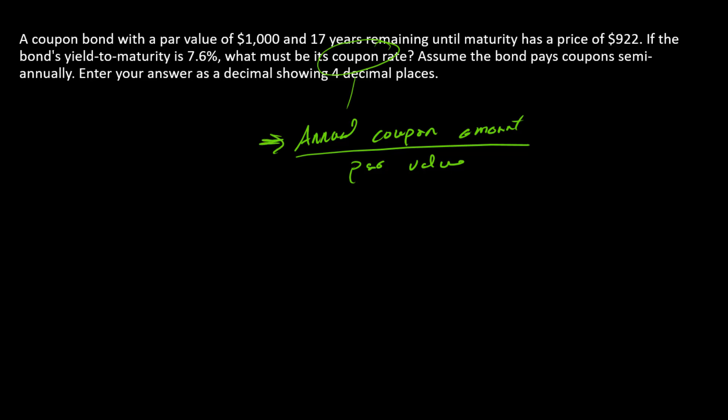Let's create a timeline for this bond. First of all, we see there's 17 years remaining until maturity and semi-annual payments, and so that means we need to create a semi-annual timeline with 17 times 2 is 34 ticks.